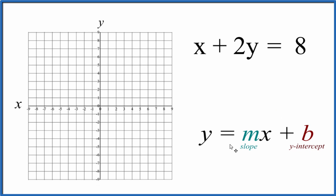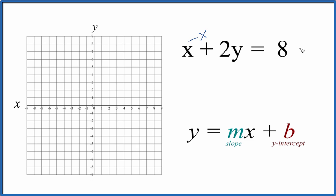So we want y by itself, so let's subtract x from each side, minus x and minus x. That gives us 2y equals, let's call it negative x plus 8. That's the same thing, but now we have x here with this format, and then we have the y-intercept here.